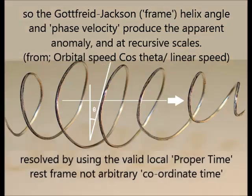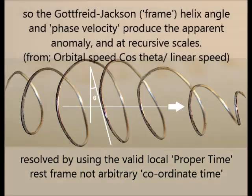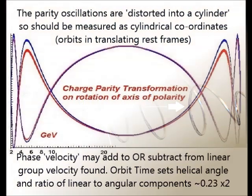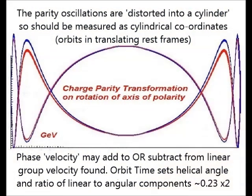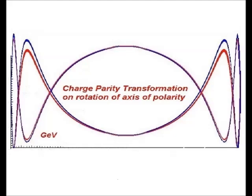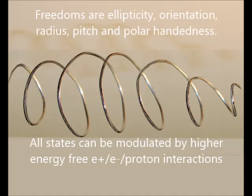The parity oscillations are distorted into a cylinder so should be measured as cylindrical coordinates orbiting in a translating rest frame. Phase velocity adds or subtracts from linear group velocity, but orbit time sets helical angles and a ratio of linear to phase components.